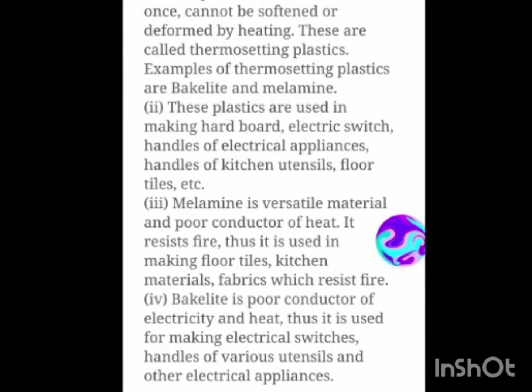Melamine is a versatile material and a poor conductor of heat — it resists fire. Being a poor conductor of heat means it has resistance to fire, so we can call it an all-rounder material. It is used in making floor tiles, kitchen materials, and fabrics which resist fire. Another type of thermosetting plastic is bakelite, which is also a poor conductor of electricity and heat. So it is used for making electrical switches, handles of various utensils and other electric appliances.